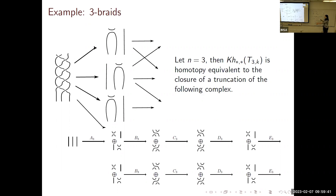This is a way to reverse-engineer the Khovanov homology of torus links with finitely many full twists from the stable homology that gives you the categorification of the projector. It makes explicit what Rozansky meant when he said you can approximate the categorification of the Jones-Wenzl projector by finitely many twists.